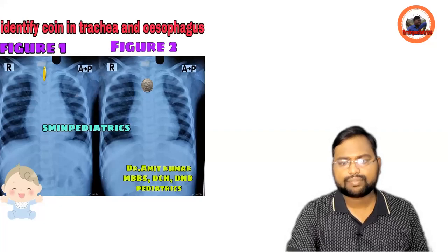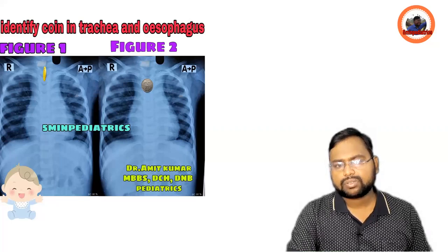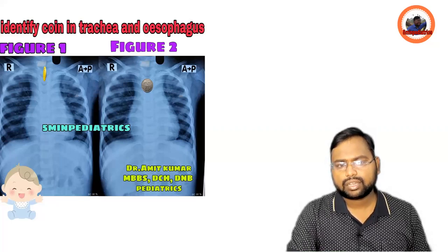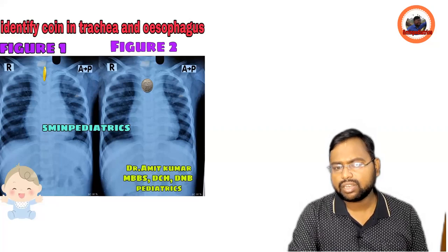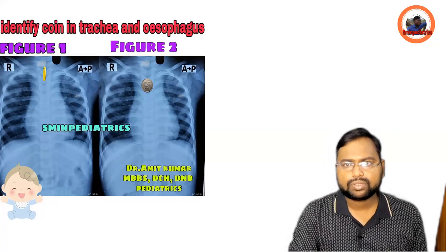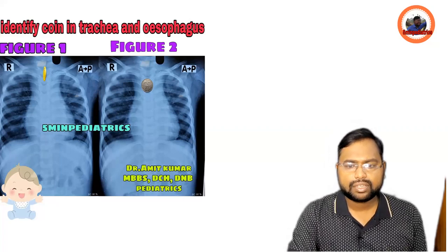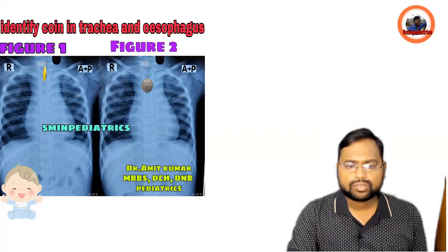Hello friend, welcome to my channel Five Minute Pediatric. A few days back I asked a question related to a coin: if you get a coin in a chest X-ray, how will you identify whether it is in the esophagus or in the trachea? This is very simple — you can easily identify it. I have made a mnemonic for this.